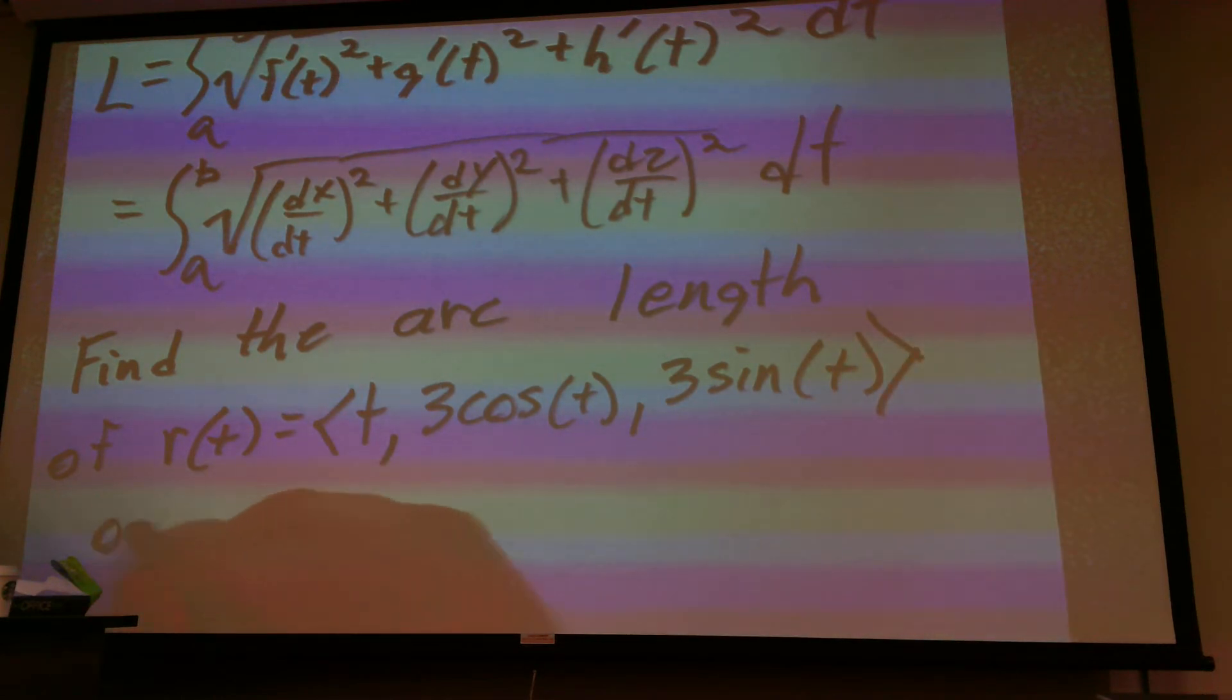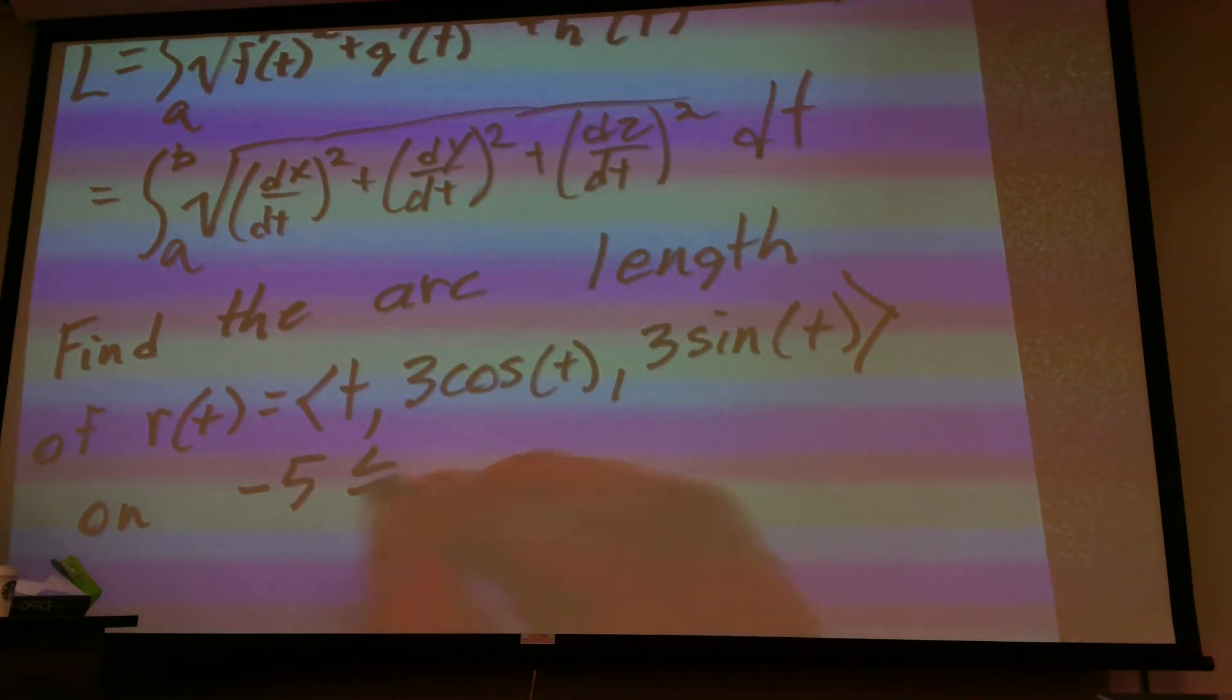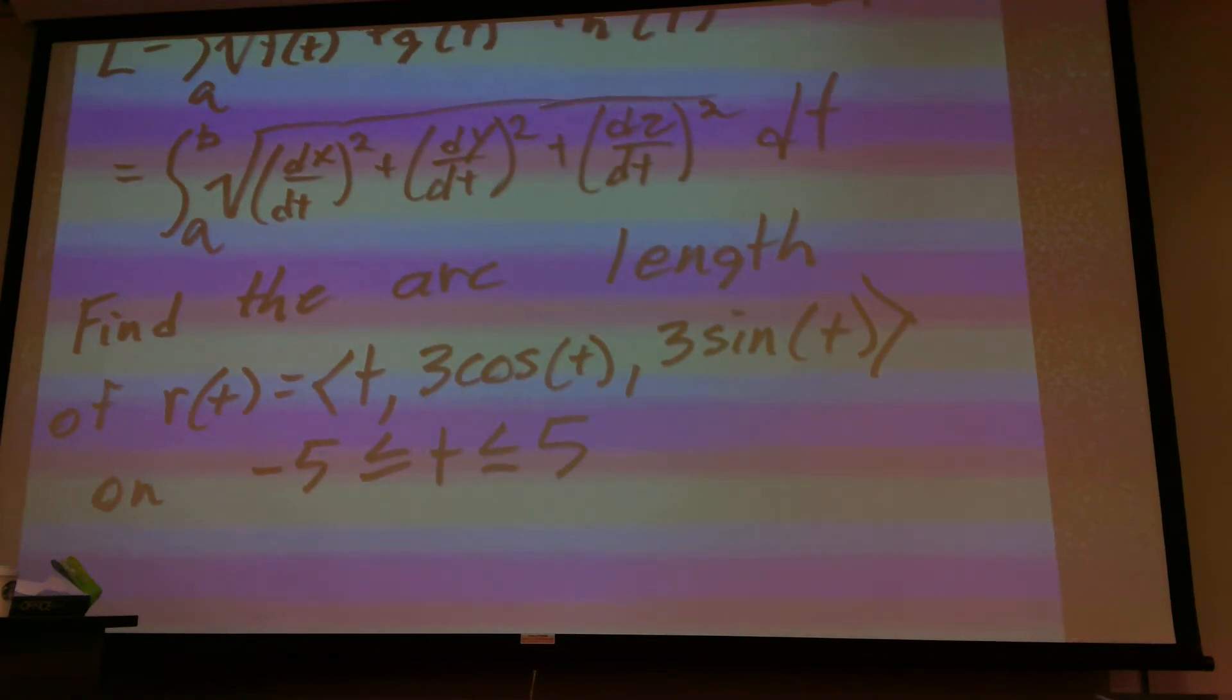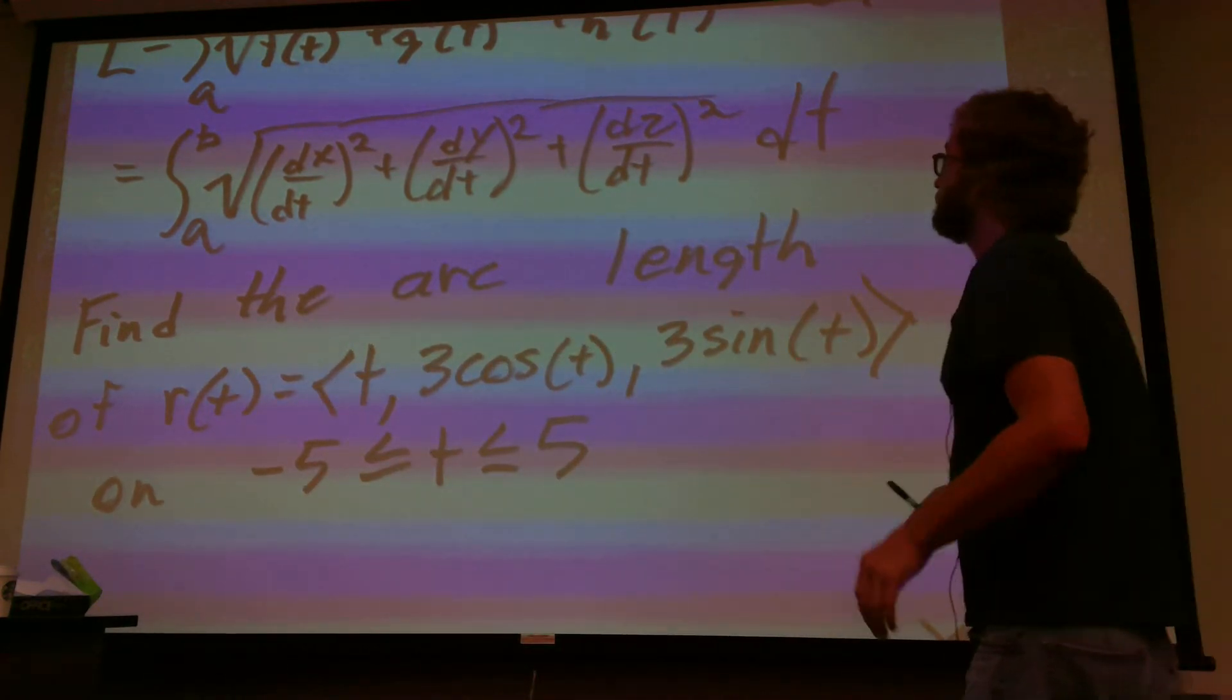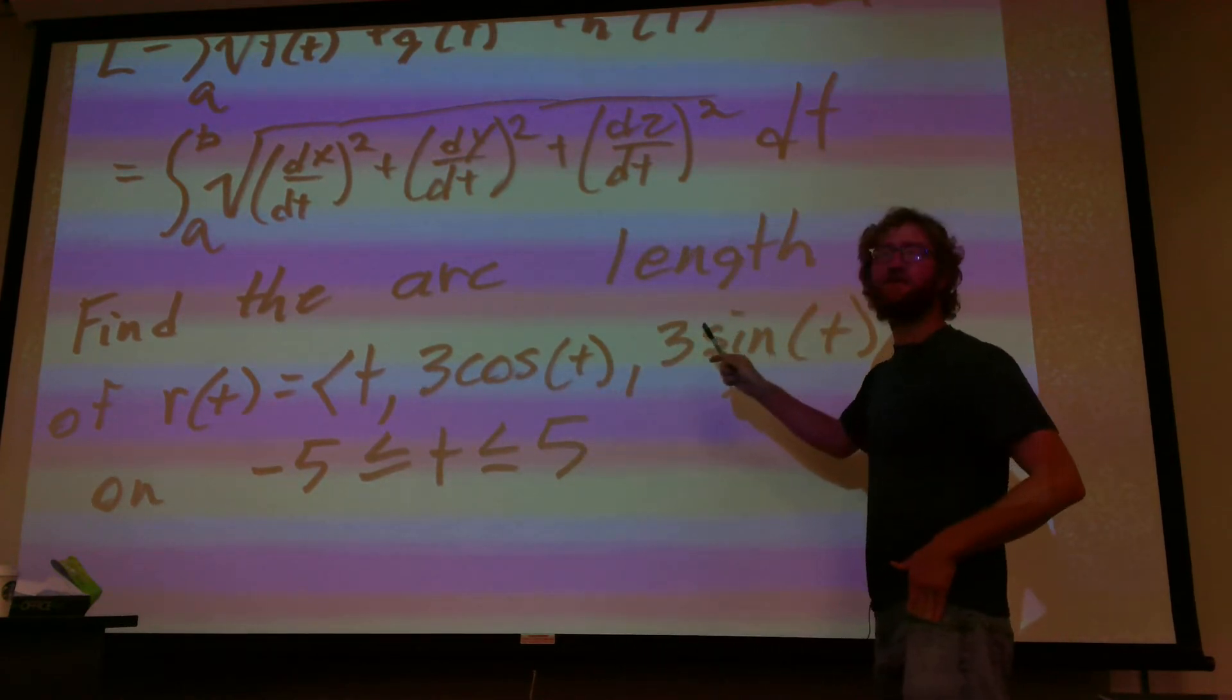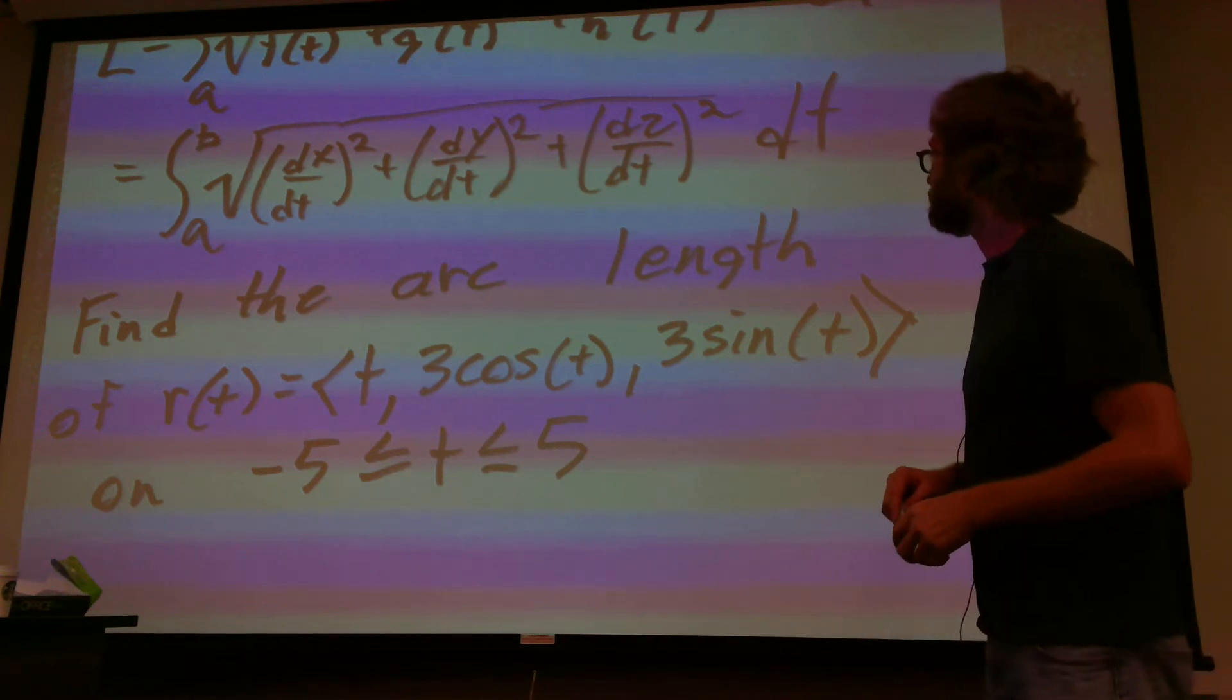We have to do this on an interval to give us our boundary terms. So this would be negative five less than or equal to t, which is less than or equal to five. So to do this, what we're going to do is we're going to take the derivative of each one of the components. This would be our x, our y, and our z, and we're going to take the derivative with respect to time of each one of them. And then we're going to integrate this thing from negative five to five.